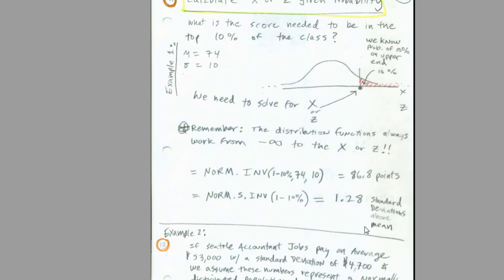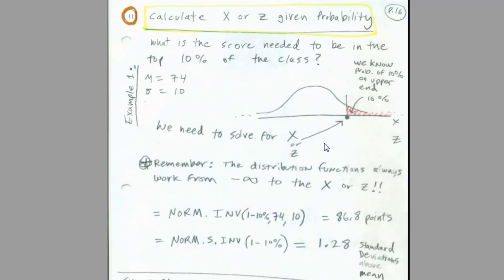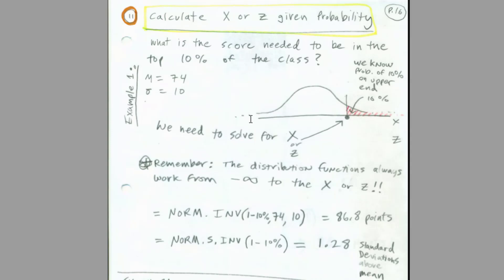The last example deals with finding an x. What if we need to know the score to be in the top 10% of the class? Area under the curve equals probability, so that equals 10%. We can't give the function just 10%, because it calculates from the low end up. We do 1 minus 10% = 90%, so it covers all that cumulative probability up to the value. It will spit out the x or z. We use NORM.INV when we want x, and NORM.S.INV when we want z.